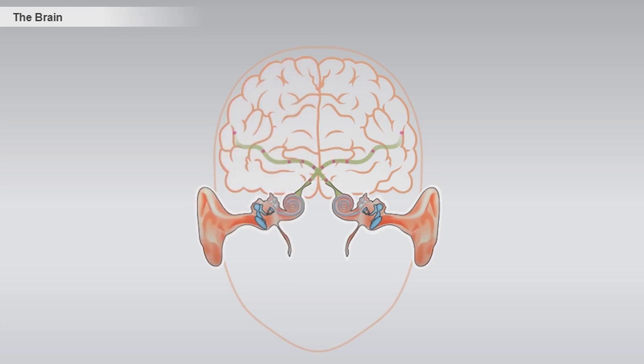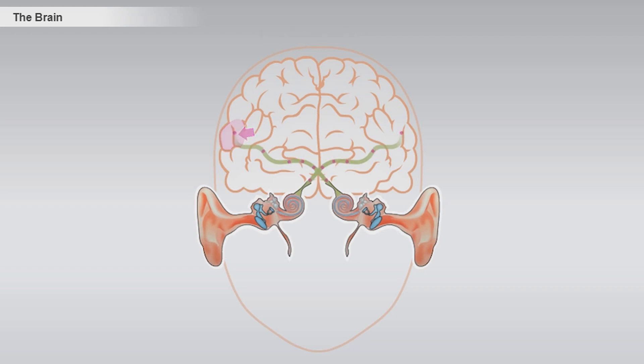When the hearing nerve leaves the brain stem, it proceeds through the middle brain to the hearing cortex. This is the end station of the hearing pathway and our tour.